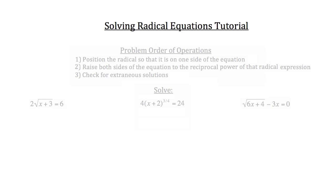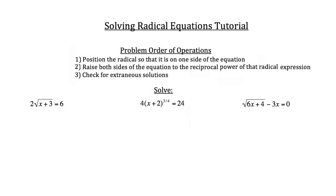Let's work on some practice problems. I've left the order of operations here for reference while we work. Starting with the first problem on the left: 2 times the square root of x plus 3 is equal to 6. Step 1 is to get the radical expression on its own on one side of the equation. I'm going to divide both sides by 2, giving us the square root of x plus 3 is equal to 3.